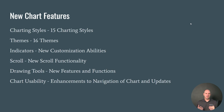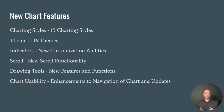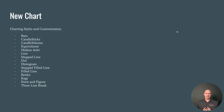When I mentioned that we took the chart and built it from the ground up, we really did. We started fresh and asked: what do we need to add, what do we need to fix, and what feedback have we gotten from our users over the years? We took all that information and compiled it. So we have 15 charting styles, 16 new themes, new customization abilities and indicators, scrolling functionality, drawing tools, and chart usability. Let's start with charting itself, as that's the core.